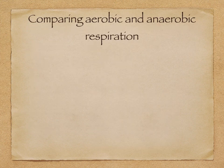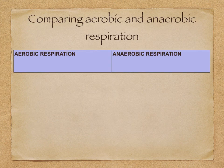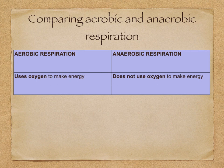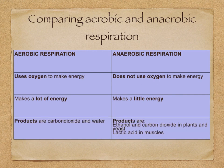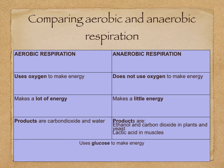Finally, the differences between aerobic and anaerobic respiration: Aerobic respiration uses oxygen to make energy, whereas anaerobic respiration doesn't use oxygen. Aerobic respiration makes a lot of energy, whilst anaerobic respiration only makes a little energy. The products of aerobic respiration are carbon dioxide and water, whereas in anaerobic respiration they are ethanol and carbon dioxide in plants and yeast, and lactic acid in muscles. Both processes use glucose to make energy.